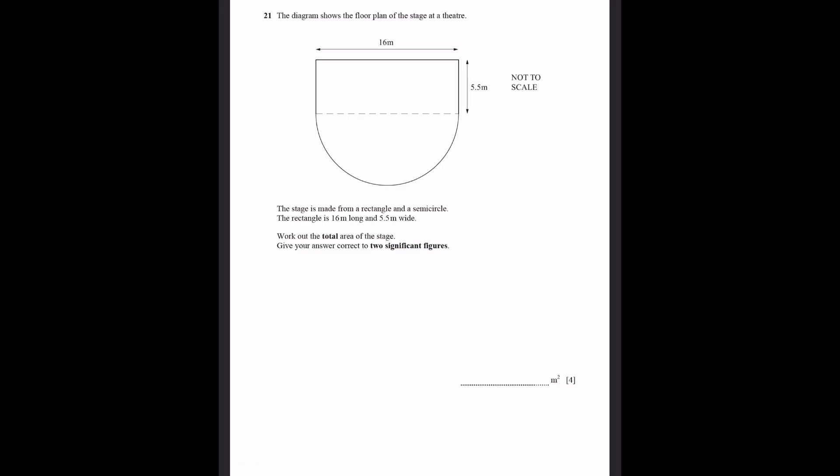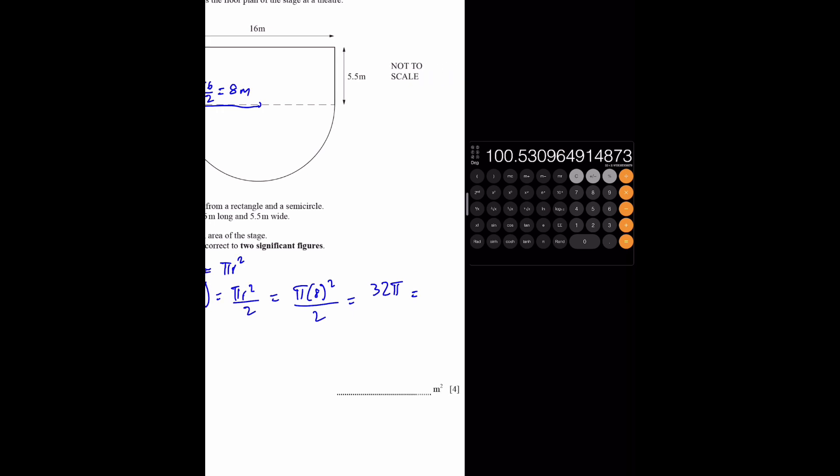Question 21. The diagram shows the floor plan of the stage at a theater. The stage is made from a rectangle and a semicircle. The rectangle is 16 meters long and 5.5 meters wide. Work out the total area of the stage. The radius of the circle will be 16 by 2, which equals 8 meters, because 16 is the diameter. Area of semicircle is pi r squared by 2. That will be pi into 8 squared by 2, which is 64 pi by 2, 32 pi. 32 multiplied by pi, we get 100.53 meters squared.